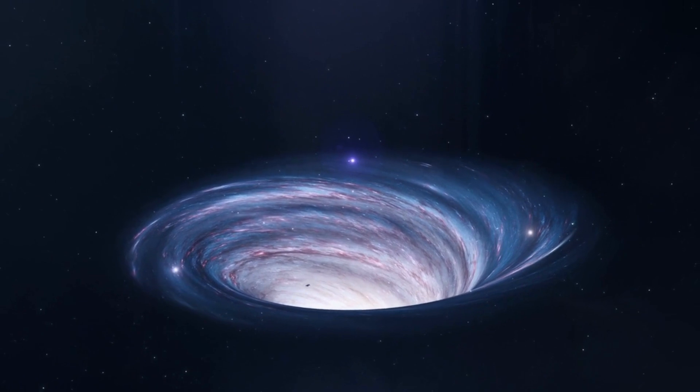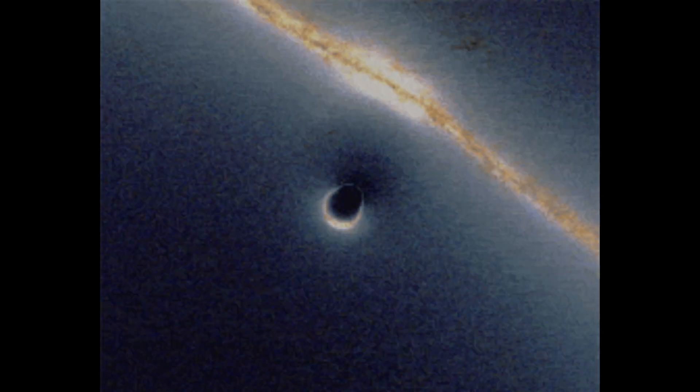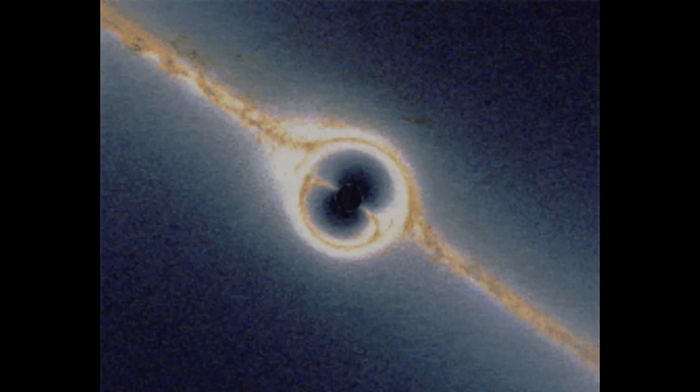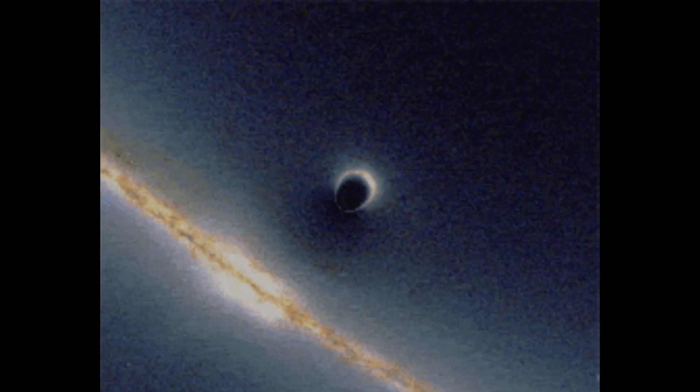If you pass the event horizon, there is no going back. As you can see in this video, most of the light is passing around that event horizon. This is because any further, and the light just gets sucked in.